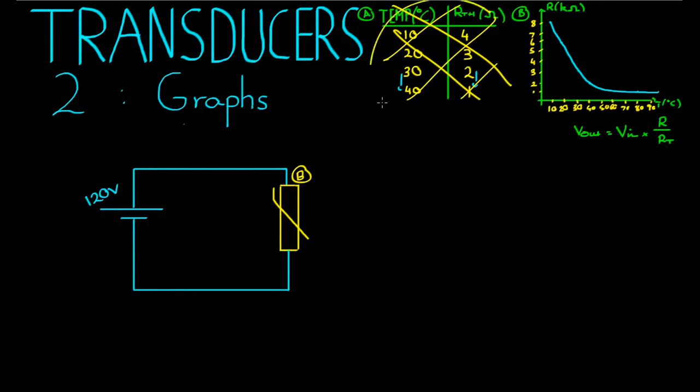We used this bit of information here, which is a chart. It basically said for these different temperatures down here, we get different resistances. Because for a thermistor transducer, as the temperature changes, the resistance changes.